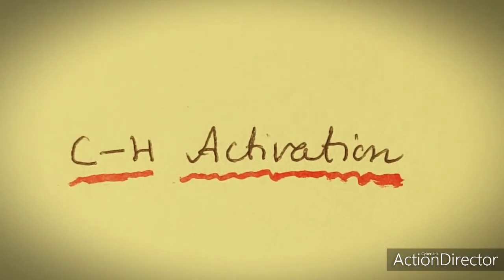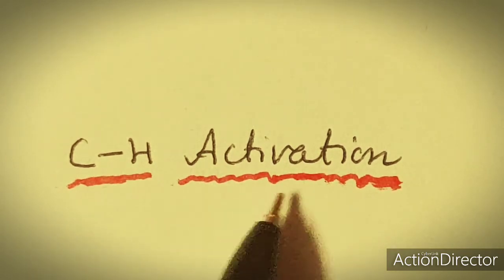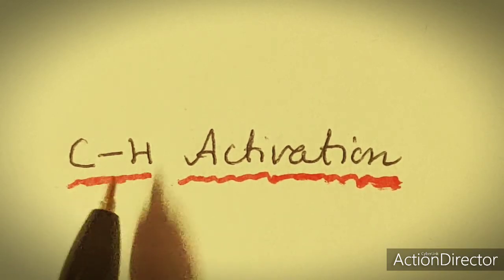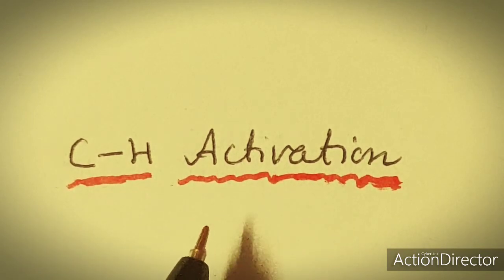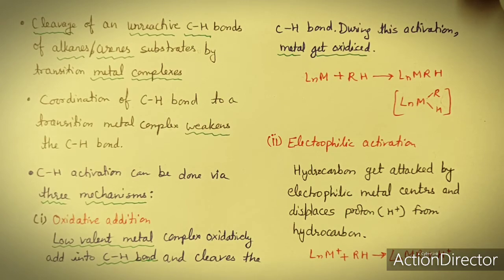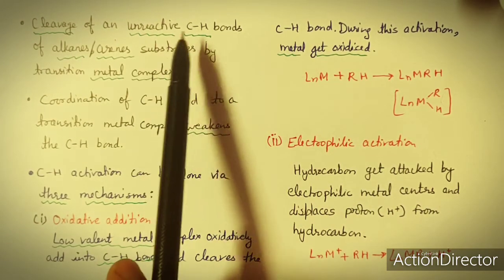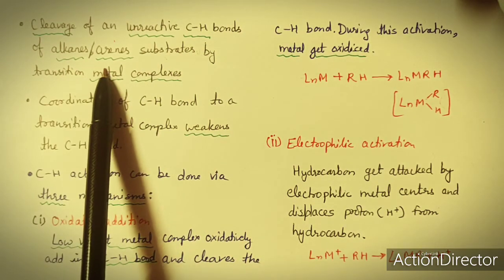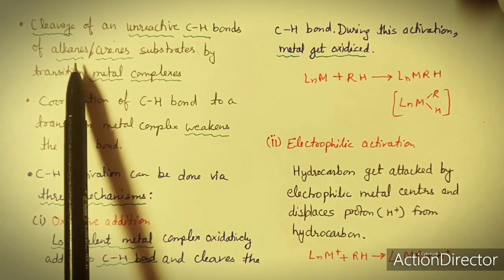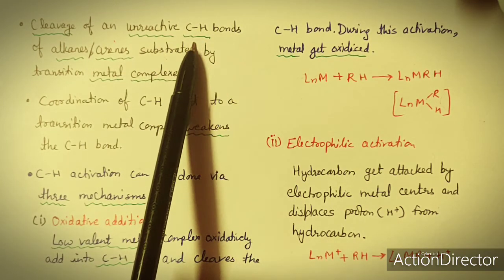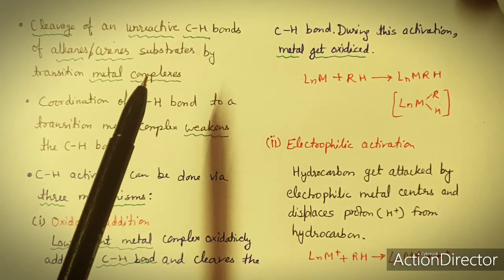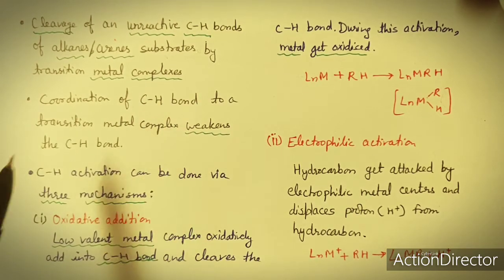Today in this lecture we will discuss C-H activation. What is C-H activation and how can a C-H bond be activated and functionalized for a particular purpose? C-H bond activation is the cleavage of an unreactive C-H bond of alkanes or arenes by transition metal complexes. The C-H bond is very stable, so cleaving it with the help of transition metal complexes is what we call C-H activation.